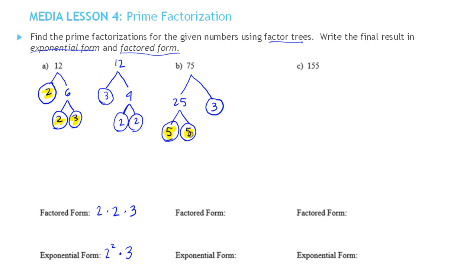So here are our 3 prime numbers whose product equals 75. Writing them in increasing order we have 3 times 5 times 5, or in exponential form this is 3 times two factors of 5, which is 5 squared.